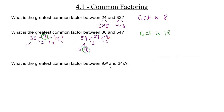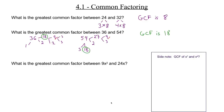Now let's try this with algebraic expressions containing variables: 9x² and 24x. We have the numbers covered, but what about the x's? Let's look at a side note. What is the greatest common factor between x⁷ and x⁴? Consider what x⁷ actually looks like — it's 7 x's multiplied together. And x⁴ is 4 x's multiplied together.